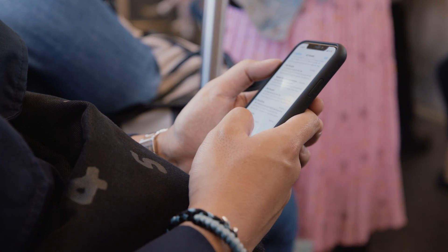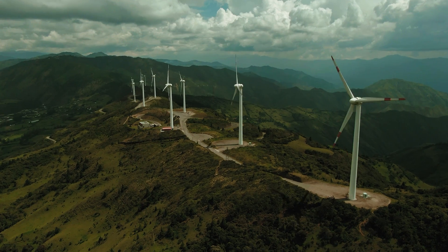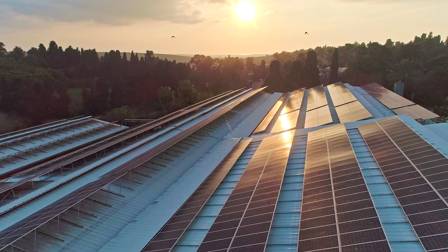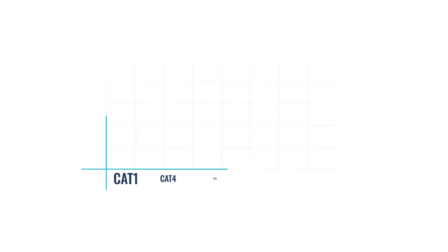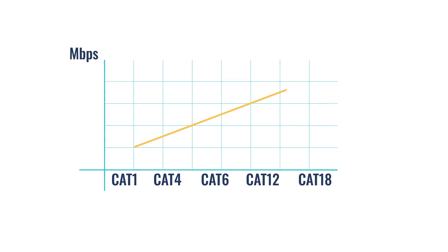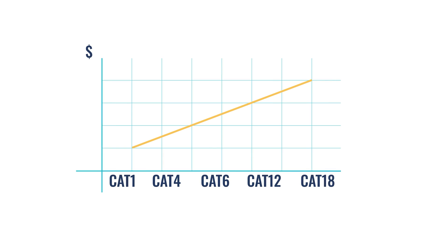CAT 4 is a widely sold product, optimal for speed-intensive applications such as public Wi-Fi, but also ideal for remote control and monitoring of M2M type use cases. CAT 4 is up to 10 times faster than CAT 1. The same goes with each category — the higher the category, the higher the speed, but they also get more expensive and power hungry.